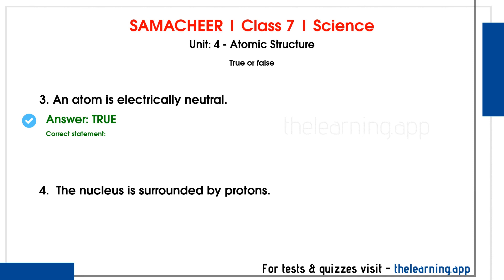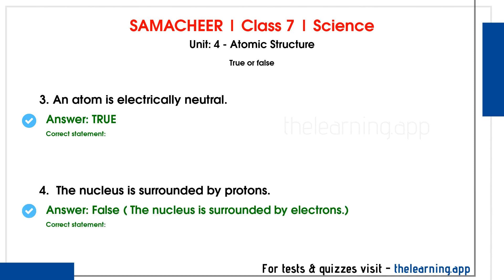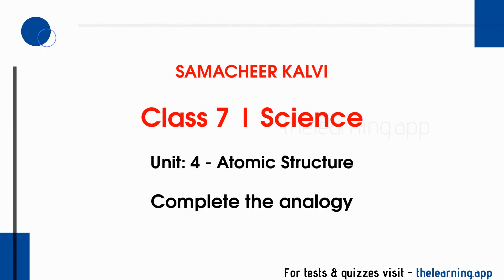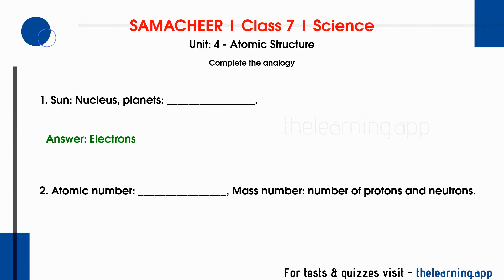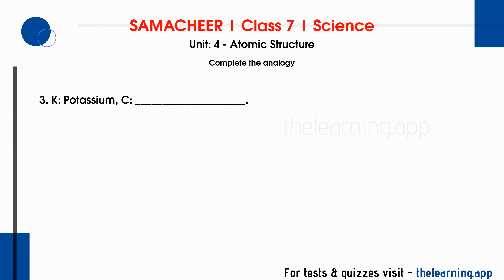Fourth: the nucleus is surrounded by protons — this is false. The nucleus is surrounded by electrons; protons are inside the nucleus. Next, complete the analogy. First: sun is to nucleus as planets are to electrons — just as planets revolve around the sun, electrons revolve around the nucleus in an atom. Second: atomic number is to number of protons as mass number is to total number of protons and neutrons in the nucleus. Third: K is to potassium as C is to carbon.